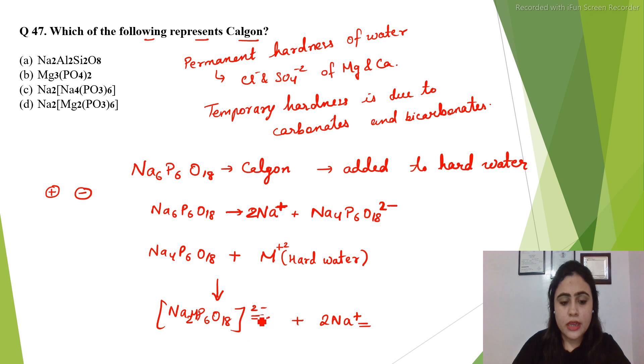This will precipitate as a complex. This metal, calcium or magnesium, will precipitate as a complex and be left behind, and then we can have soft water.